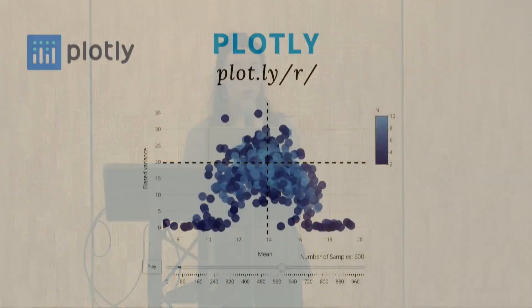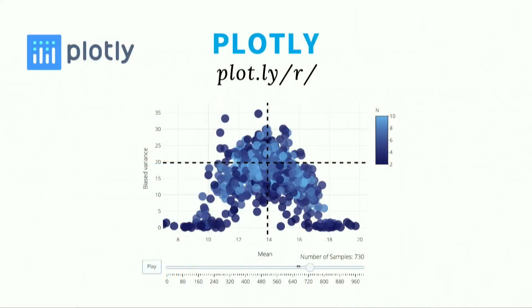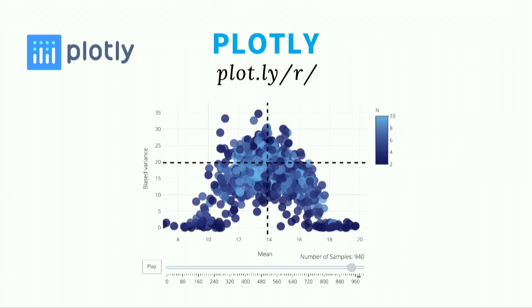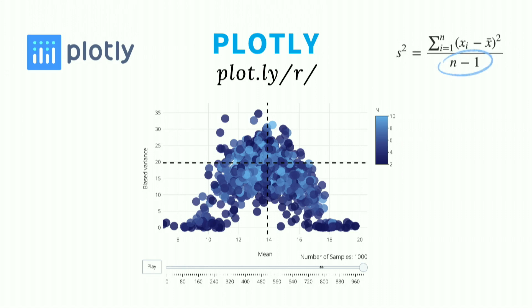The first one is Plotly. Plotly lets you create clickable and interactive plots so that a learner can see a concept play out in real time. This, for example, is a Plotly plot that we used to explain why the equation for sample variance needs to be divided by n minus one. And we of course explain this in the text before showing this plot.